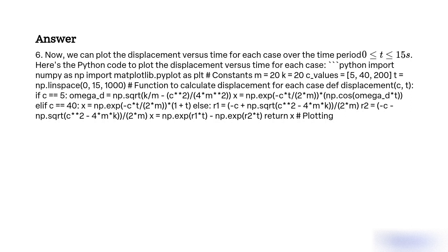Python code: import numpy as np and import matplotlib.pyplot as plt. Constants: m = 20, k = 20, c_values = [5, 40, 200], t = np.linspace(0, 15, 1000). Define a displacement function for each case. If c == 5 (under-damped): omega_d = np.sqrt(k/m − (c**2)/(4*m**2)), x = np.exp(−c*t/(2*m)) * np.cos(omega_d * t).